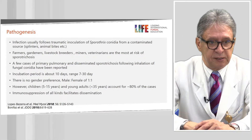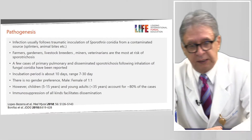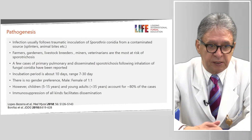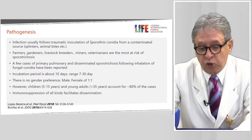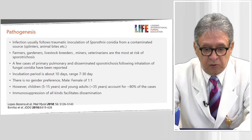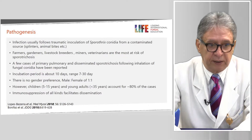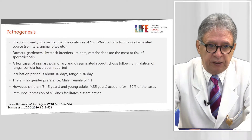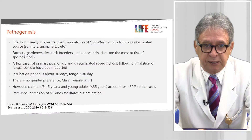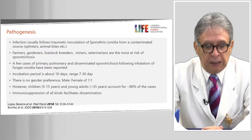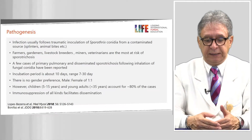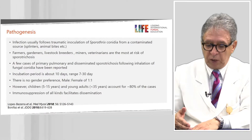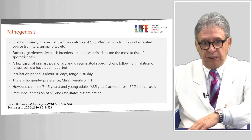Related to pathogenesis, remember that it's a classical traumatic infection — an implantation mycosis. In general, the source is splinters, thorns, or animal bites, especially by rodents such as rats, mice, or squirrels. We also have different species of bats. A few cases are located in primary pulmonary form, caused by inhalation of the fungus. Remember that the incubation period is about three weeks after inhalation before the disease starts.